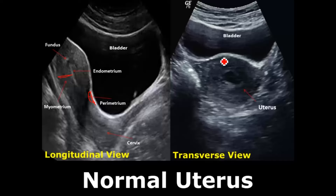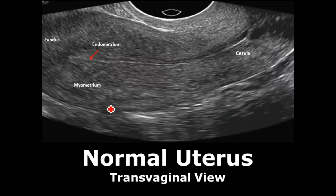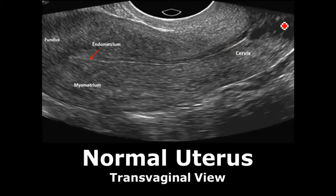In the transverse view, this is the appearance of the uterus below the bladder. In the transvaginal view, we see more detailed information of the uterus — a zoomed-in view giving us more detail. The endometrium is seen more clearly, with the fundus on the top and the cervix on the bottom. The myometrium is also seen very clearly.